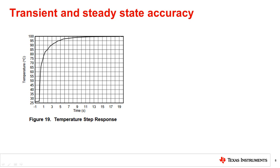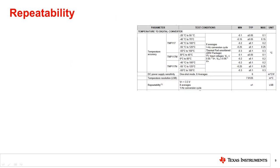When the time constant of the reference is much shorter than the sensor, a measurement may result in negative error. Similarly, if the time constant of the reference is much longer than the sensor, a measurement may result in positive error. Thus, in order to compare the accuracy of the measurement system to the reference, the thermal step response of both the reference and measurement system must be taken into account. We have now reviewed the various sources of error outside of the sensor itself, including the measurement system, operating environment, and measurement conditions, and how to isolate each of them.